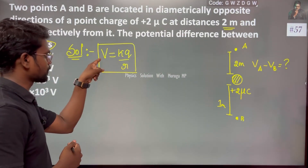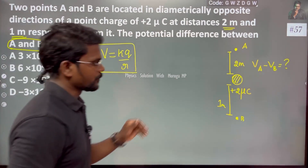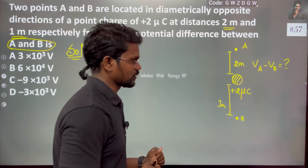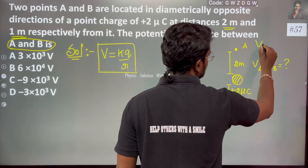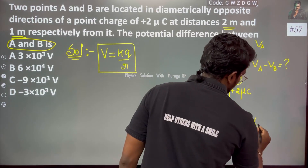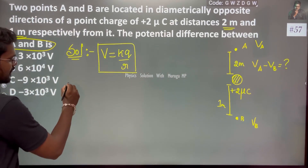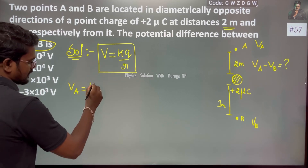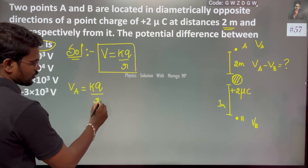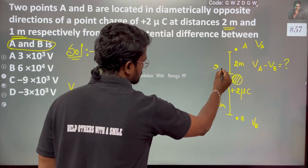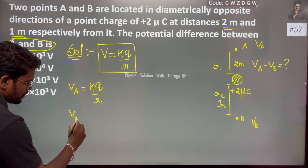As distance increases, potential decreases. We will calculate VA and VB. The distance to point A is r1 = 2 meters, and the distance to point B is r2 = 1 meter. VB = k times q divided by r2.